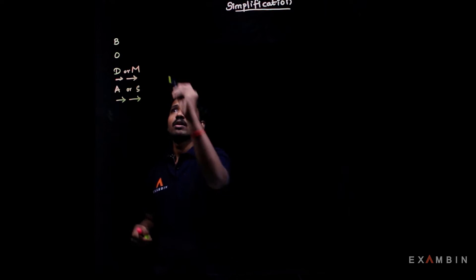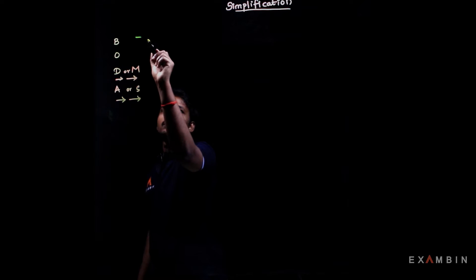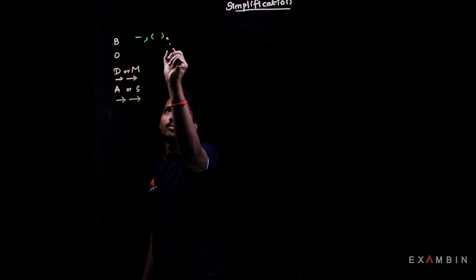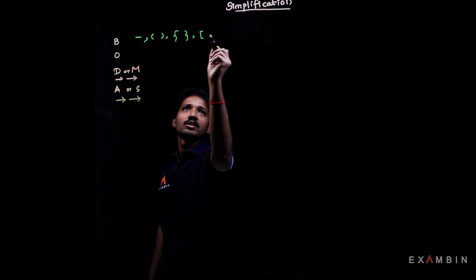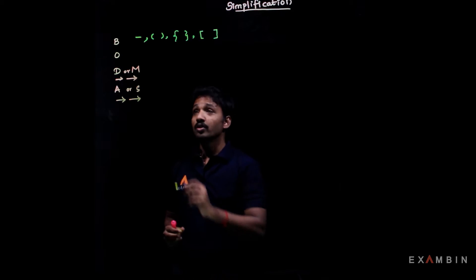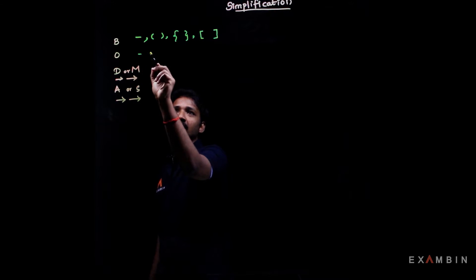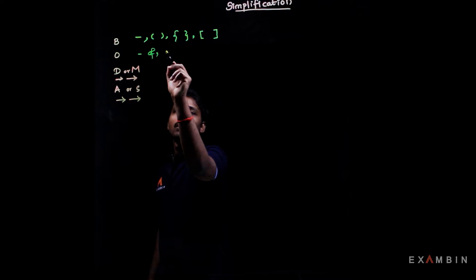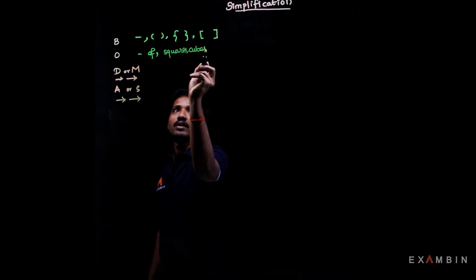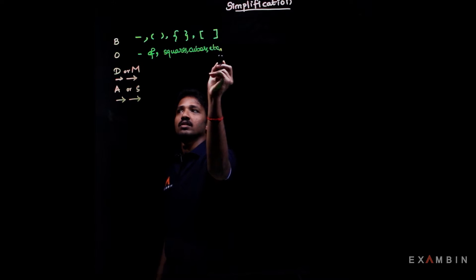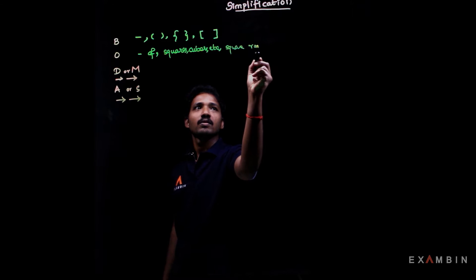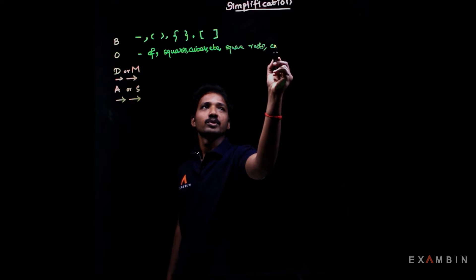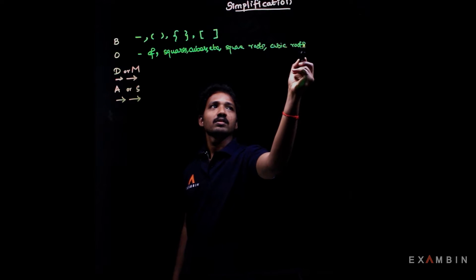Under Brackets, you have the line bracket, normal bracket, curly bracket, and last the rectangle bracket. Under Orders, you will find squares, cubes, square roots, etc.